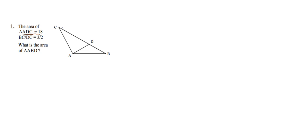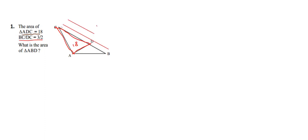18. So here you can see triangle ADC — this triangle has an area of 18. Now BC divided by DC is equal to 3 by 2. Here we have BC and divided by we have DC, so this is DC is equal to 3 by 2. Now what is the area of triangle ABD?